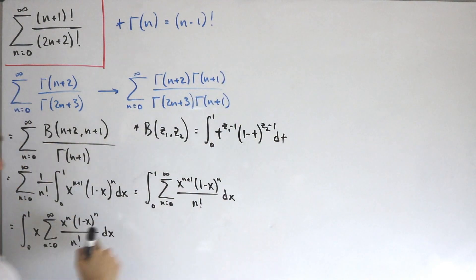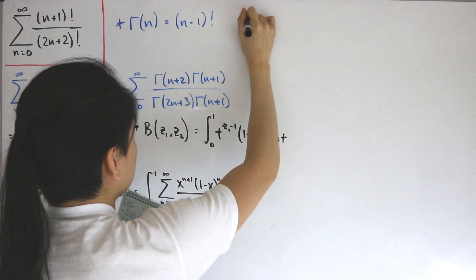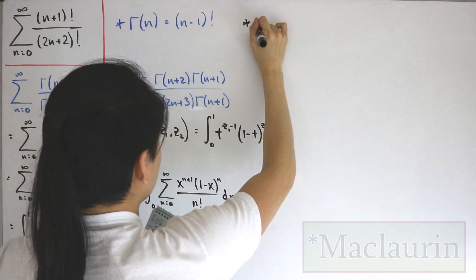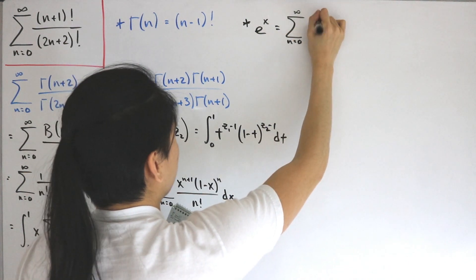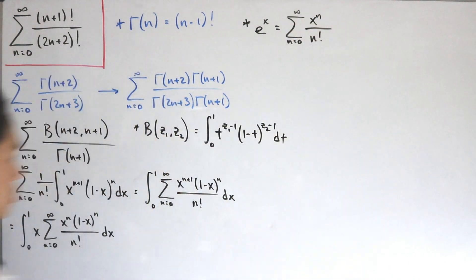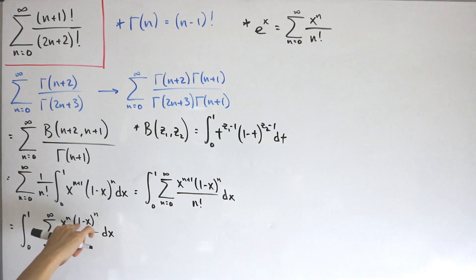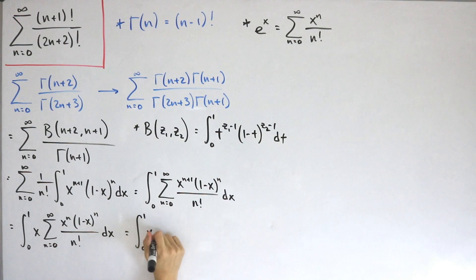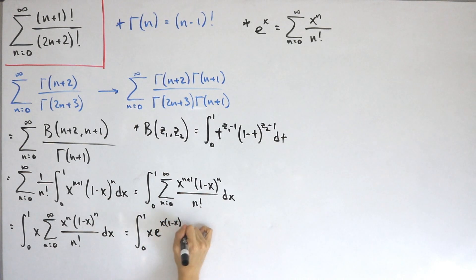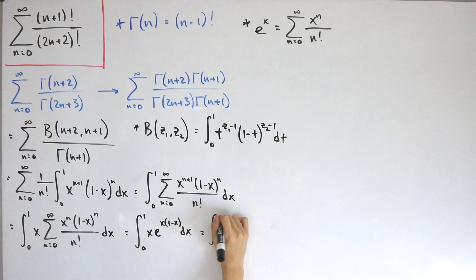Notice that this sum is actually the Taylor series representation of the exponential function: e^x = Σ x^n/n!. In a similar fashion, our product x·(1-x) plays the role of x in the exponential. So the sum Σ [x(1-x)]^n/n! = e^(x(1-x)), giving us the integral from 0 to 1 of x·e^(x(1-x)) dx.